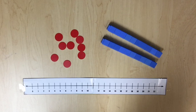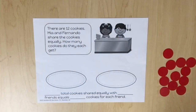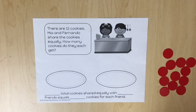Materials include counters, linking cubes, and a linking cube number line. Students will use counters to model partitive division by sharing equal groups. Previously, students modeled and described joining equal groups — scenarios with a known number of groups containing an equal number of objects — and then determined an unknown total.